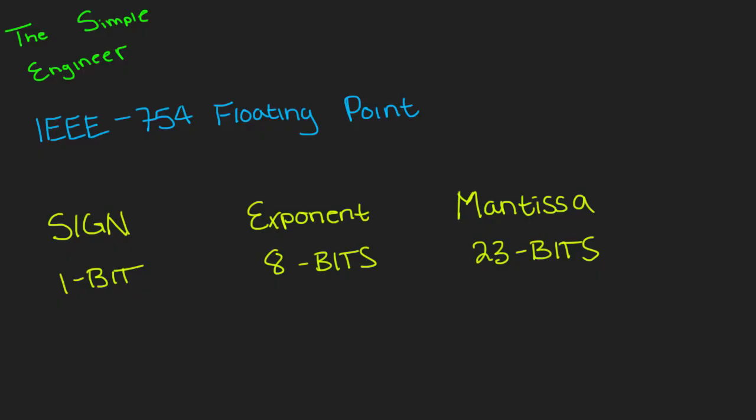Welcome to another video by the Simple Engineer. Today we're going to walk through the steps as simply as possible to convert a basic decimal number into IEEE 754 floating point. In this video specifically, we're looking at the structure for single precision numbers, which are represented in 32 bits. I may do another video on double precision, which is the same thing but represented using 64 bits.